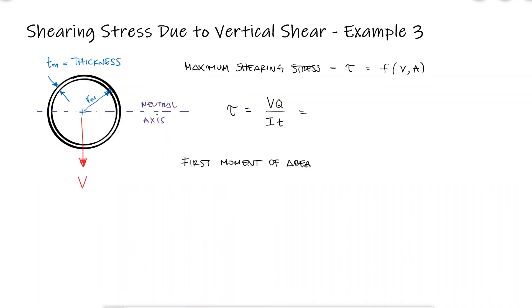This means that for the first moment of area Q, we need the area of the top or bottom half and the distance from its centroid to the neutral axis. An approximation for the area can be half a circumference times the thickness of the cylinder.